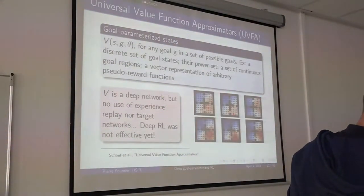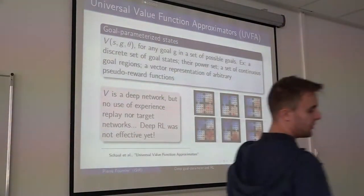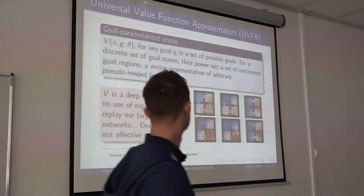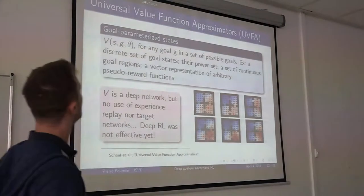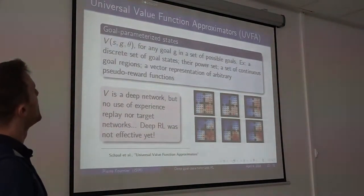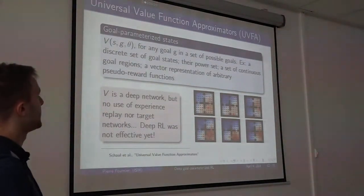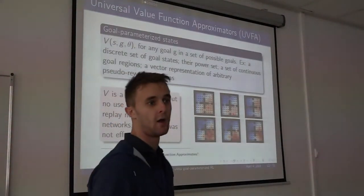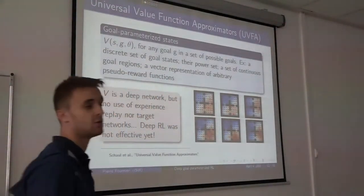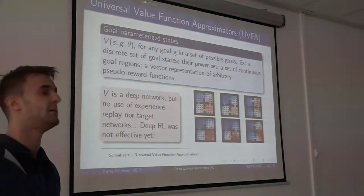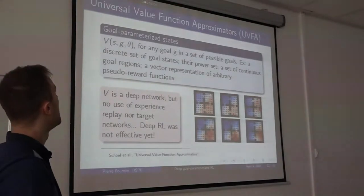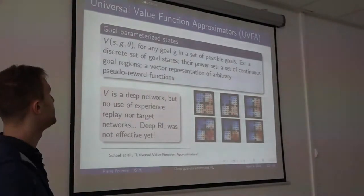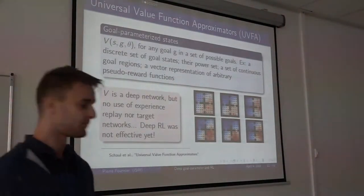The most interesting one is gradient inverting: when your actions are supposed to be bounded, it's a good idea that when you reach a bound, the gradient tells you to go in the other direction, rather than stalling on the plateau of the action space. The main ingredient of my work is what David mentioned — universal value function approximators, or UVFAs.